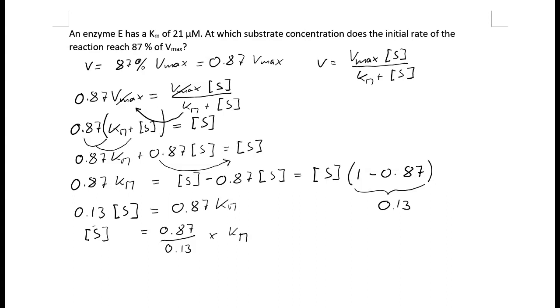Now we have given a Km. Our Km is 21 micromolar. So we can say S equals 0.87 over 0.13 times Km.